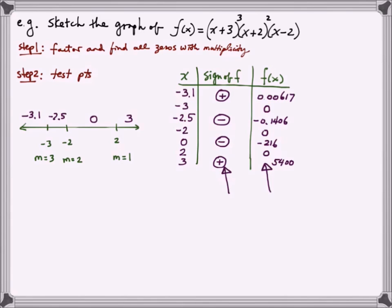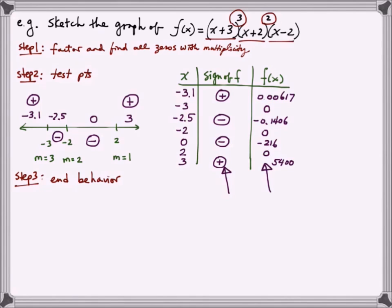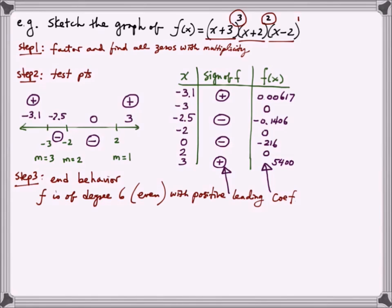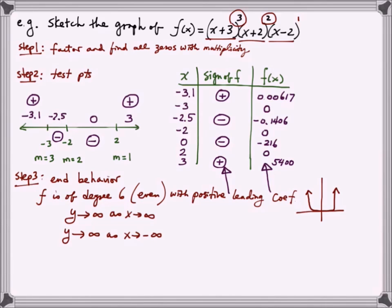Placing the sign information on the x-axis: positive before x = -3, negative between -3 and -2, negative between -2 and 2, and positive after x = 2. Step 3 is to confirm the end behavior. This is a degree 6 polynomial with a positive leading coefficient — degree 3 from the first factor, degree 2 from the second, degree 1 from the third. Being even degree with positive leading coefficient, the end behavior matches x squared: y goes to positive infinity as x goes to both positive and negative infinity.